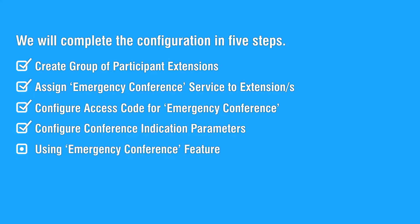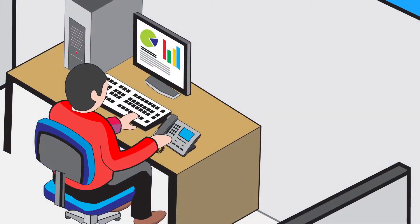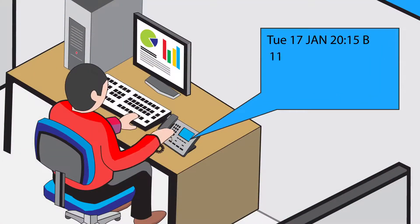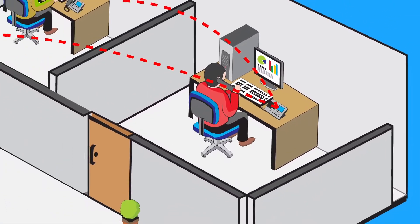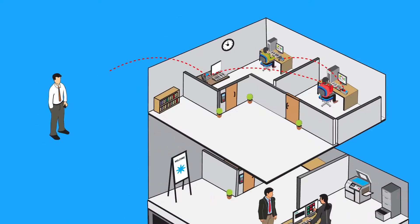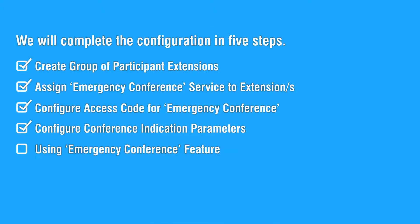Let us move on to the fifth step to see how to use the emergency conference feature. Dial the access code programmed for emergency conference, then dial the department group number. All free extensions in the group will ring, and you will be connected to the extensions that answer. This completes the entire configuration.